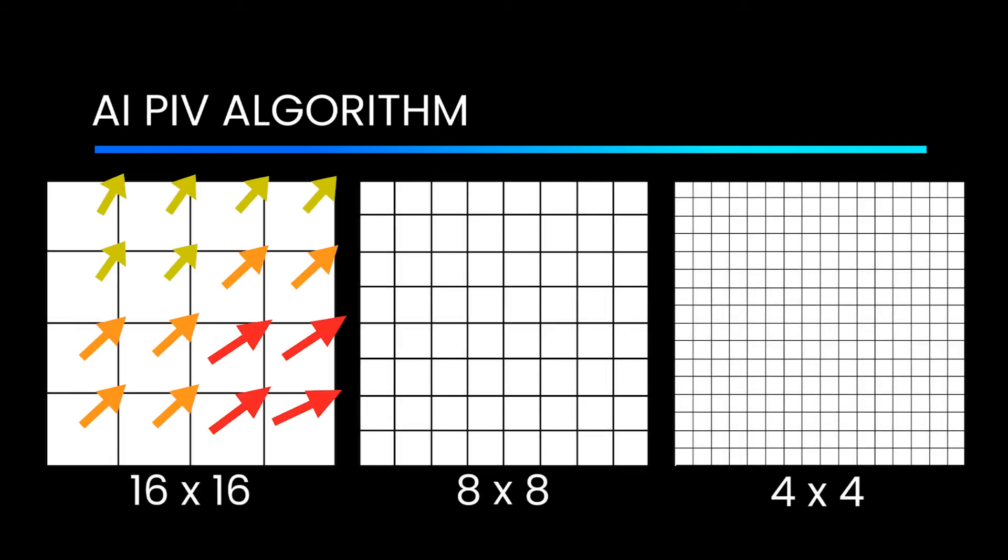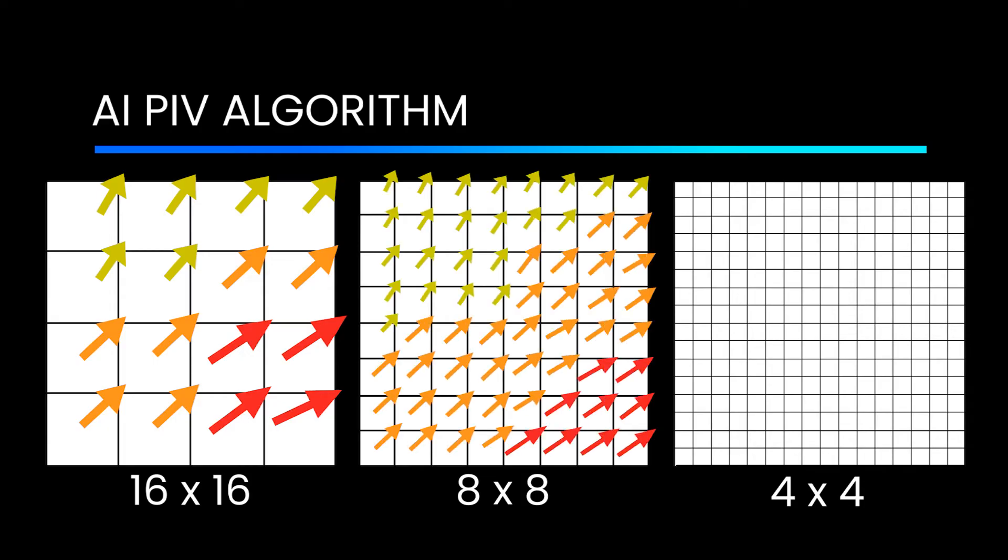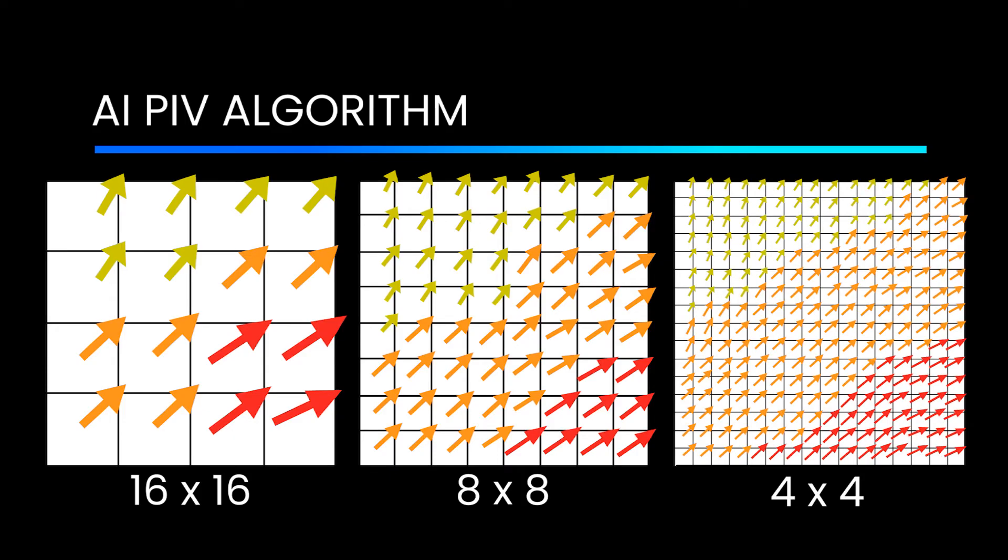Microvec's artificial intelligence PIV helps to end this limitation by generating velocity vector fields with a resolution down to a maximum of one vector per pixel when the captured images allow for it.